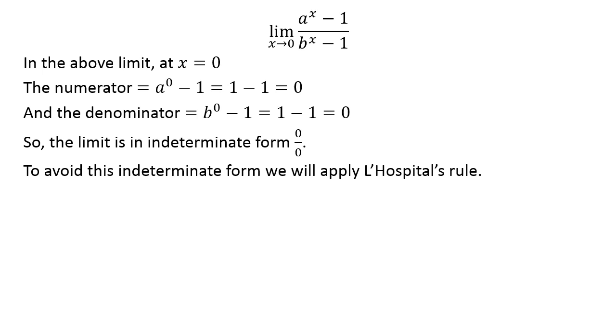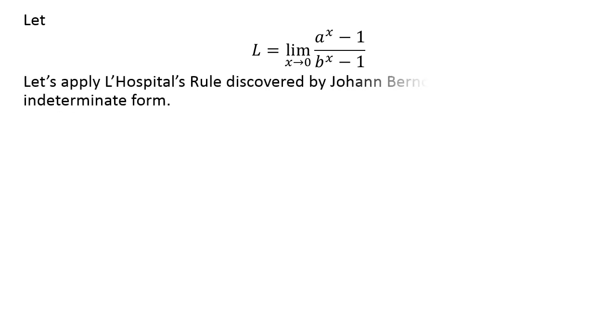We will try to avoid this indeterminate form by application of L'Hospital's rule. Let L be equal to limit of a raised to the power of x minus 1 upon b raised to the power of x minus 1 as x approaches 0. Let us apply L'Hospital's rule discovered by Johann Bernoulli to avoid this indeterminate form.